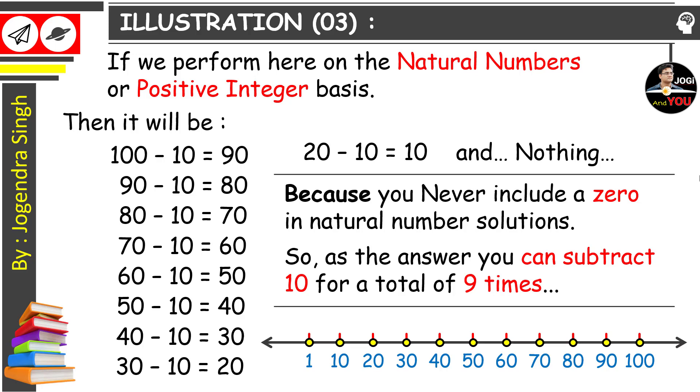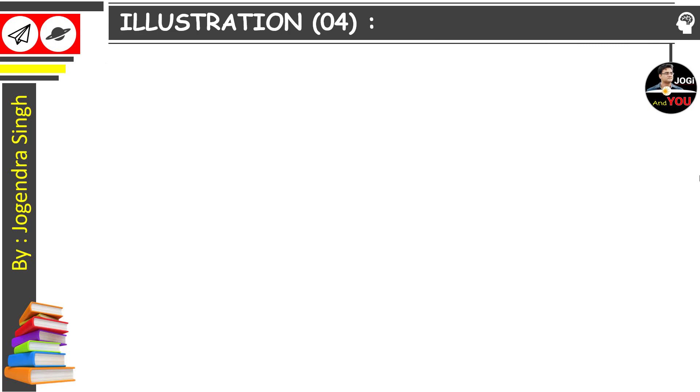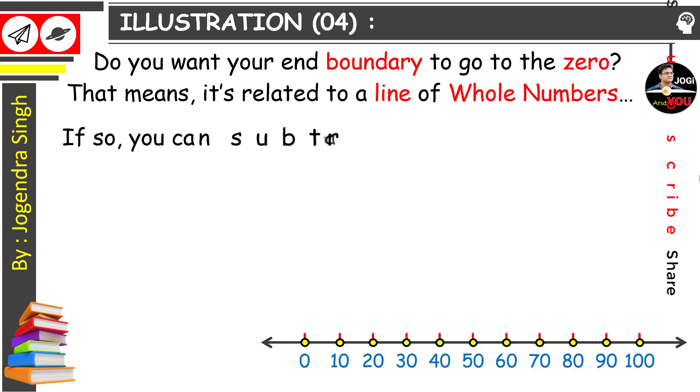However, the question could be interpreted another way as shown in the following illustration number 4. So do you want your end boundary to go to 0? That means it's related to a line of whole numbers. If so, you can subtract 10 from a total of 10 times. See how.